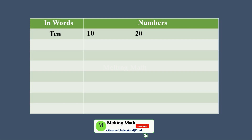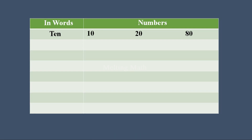How can you write 80? Just write 8 then put 1 zero, so 80 has one zero. Next, how can you write 100? 100 means there should be 2 zeros — first write 1 then write 2 zeros. Next, 200 means write 2 then write 2 zeros. Similarly, 900 means just write 9 then write 2 digits of zero with it.